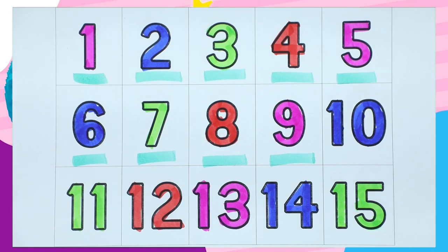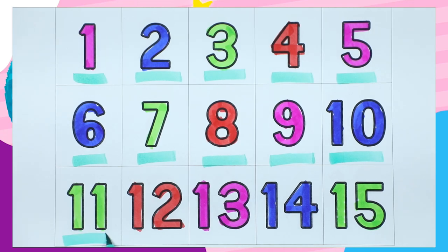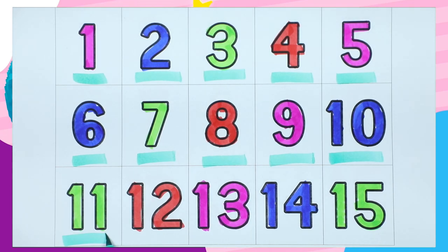One zero, ten. It's blue color. One one, eleven. Which color is this? Green. One two, twelve. It's red color.